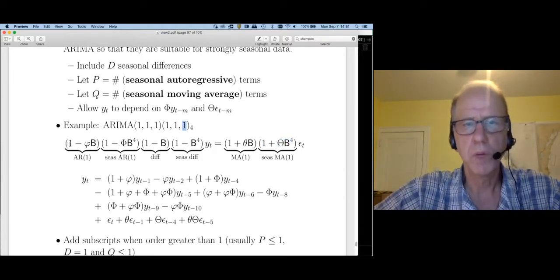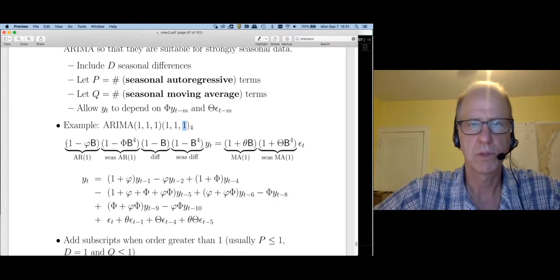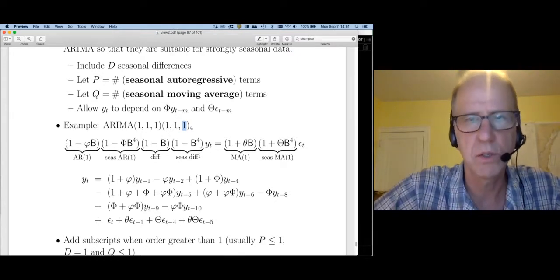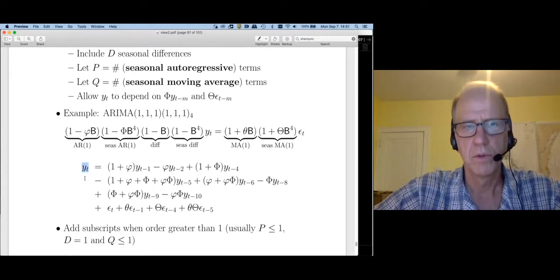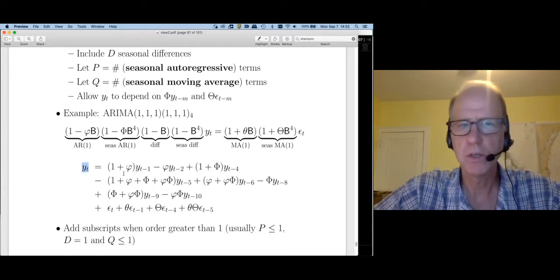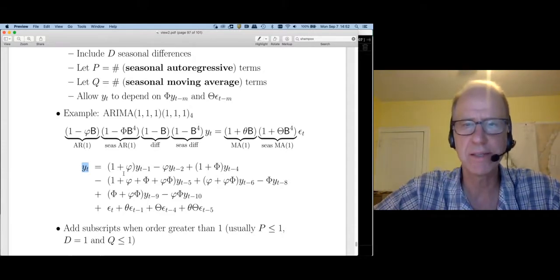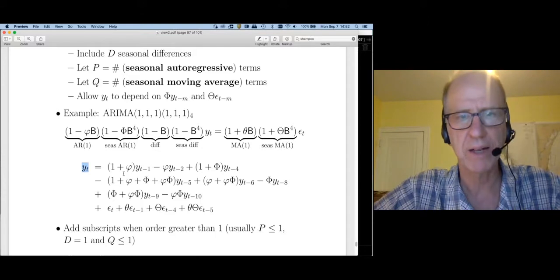If you multiply this out, it's going to be slightly tedious. I've left it as a your turn for you. And then collect all the terms. You end up with the following expression for y_t. So I'd encourage you to try this. It's slightly tedious, but it will test your understanding of this backshift notation.